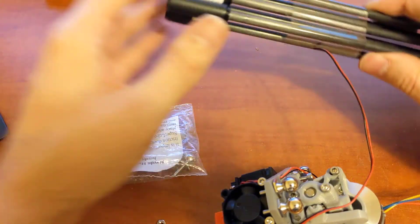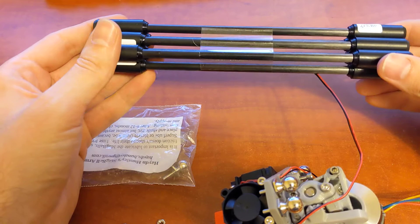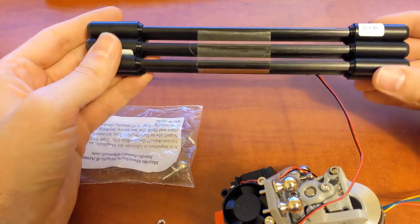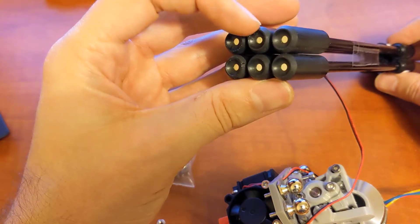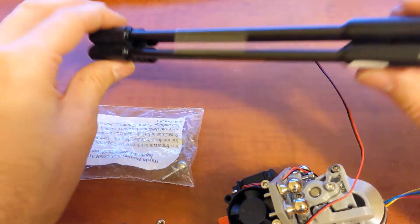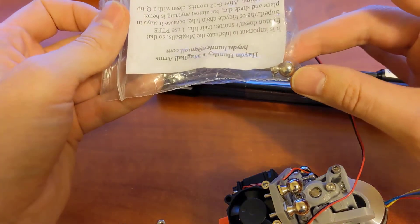So on to the actual arms themselves. So these are Hayden Huntley magball arms. These are carbon fiber rods, and then there's N20 magnets on each end of these. They come with the ball screws here. You can see I have a spare.